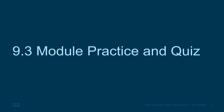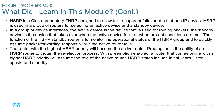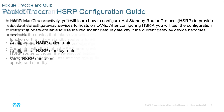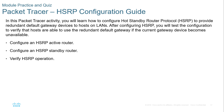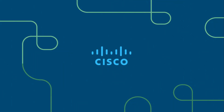That's all for this chapter. We looked at First Hop Redundancy Protocols, the major FHRP options, HSRP, and the election process. We also have a lab covering how to set all of this up. Any questions or concerns, please reach out. Thank you.